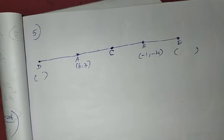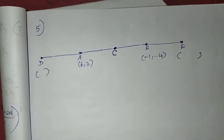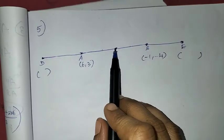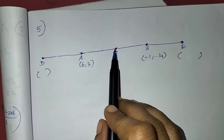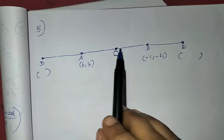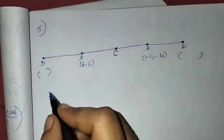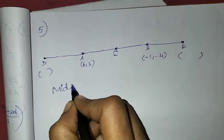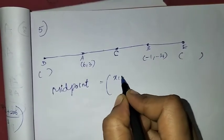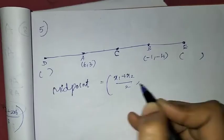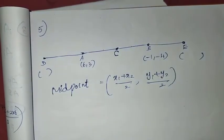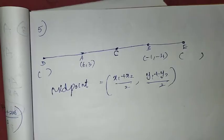Let's get started. We will use the midpoint formula. First, find the midpoint of AB, which we call C. The midpoint formula is: midpoint = (x1 + x2)/2, (y1 + y2)/2.